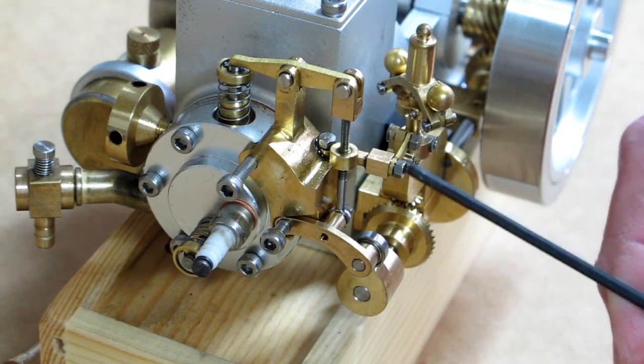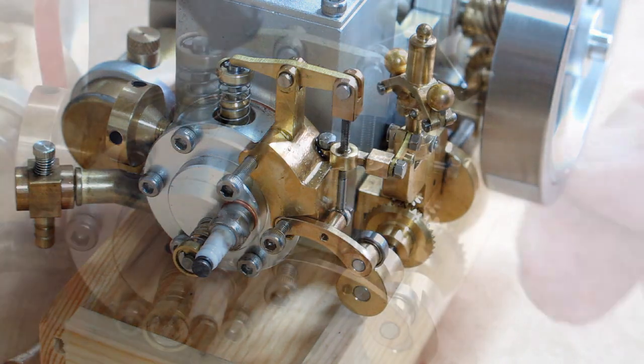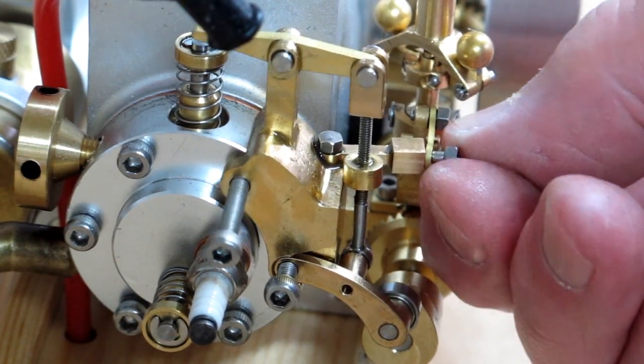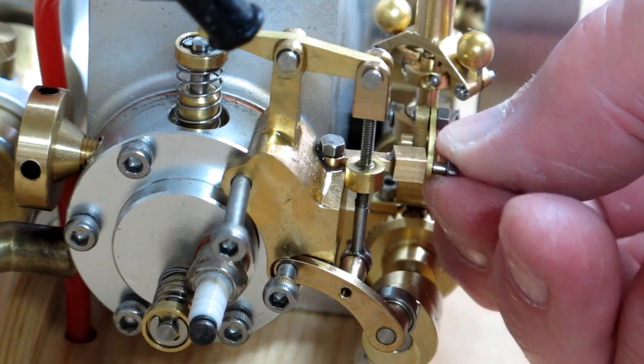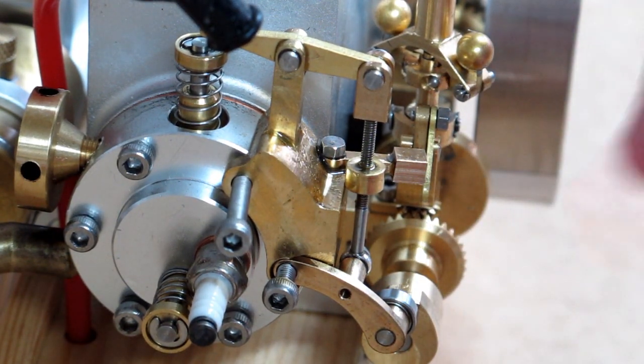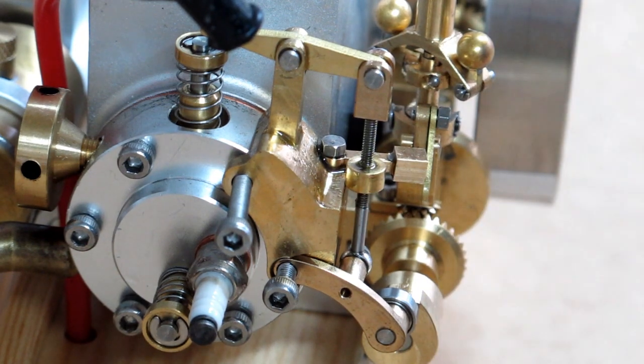We're going to have to take this part off of here. That's a real small bolt and it felt like it had a little Loctite on it. You want to be real gentle with that. I usually put small parts like that in a pill bottle so they don't disappear.